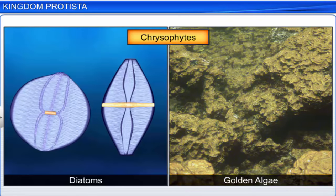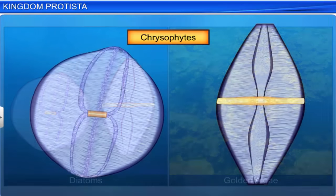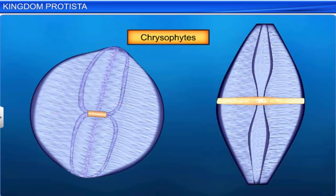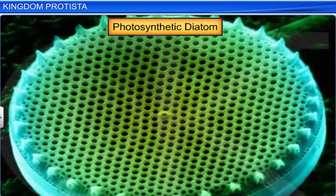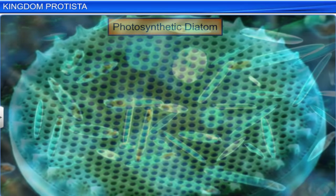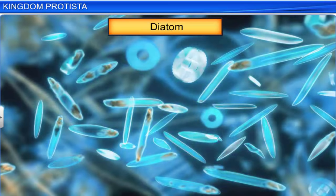Chrysophytes include diatoms and golden algae, or desmids. They are microscopic and float in great numbers in both freshwater and saline water. They are mostly photosynthetic. Diatoms are known as chief producers in the oceans.